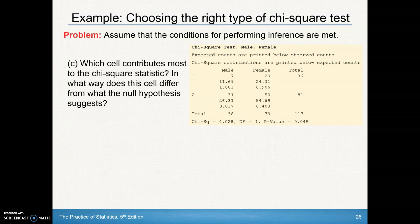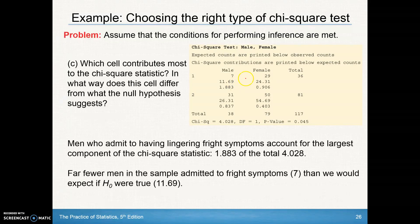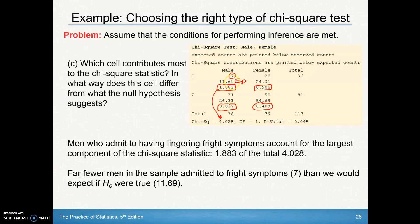The question asks which cell contributes the most to the chi-square statistic. Men who admit to having lingering fright symptoms have the biggest component in the chi-square. Far fewer men in the sample admitted to fright symptoms — only 7 observed — but our expected count was 11.69. So there were far fewer men admitting to fright symptoms than we'd expect if the null hypothesis were true.